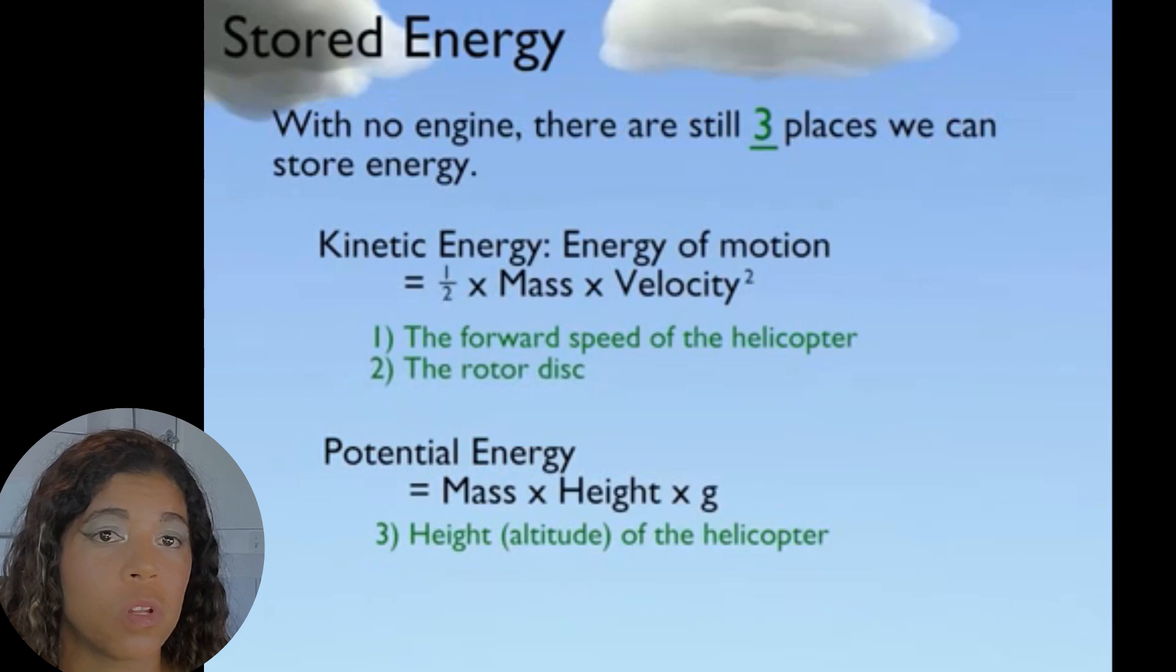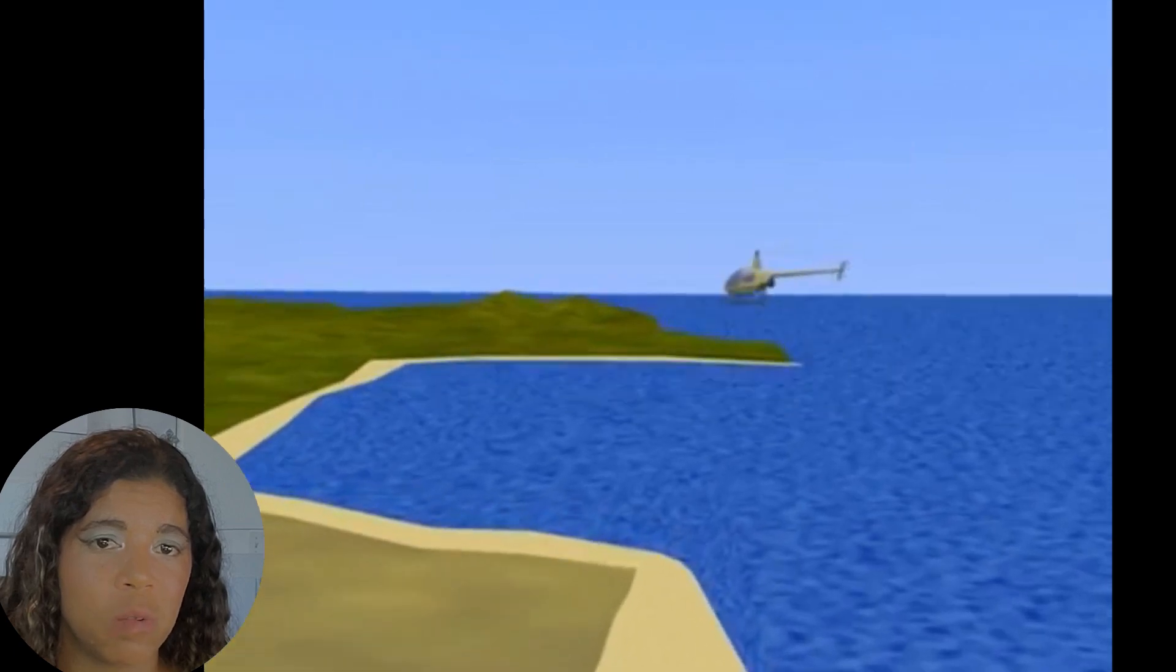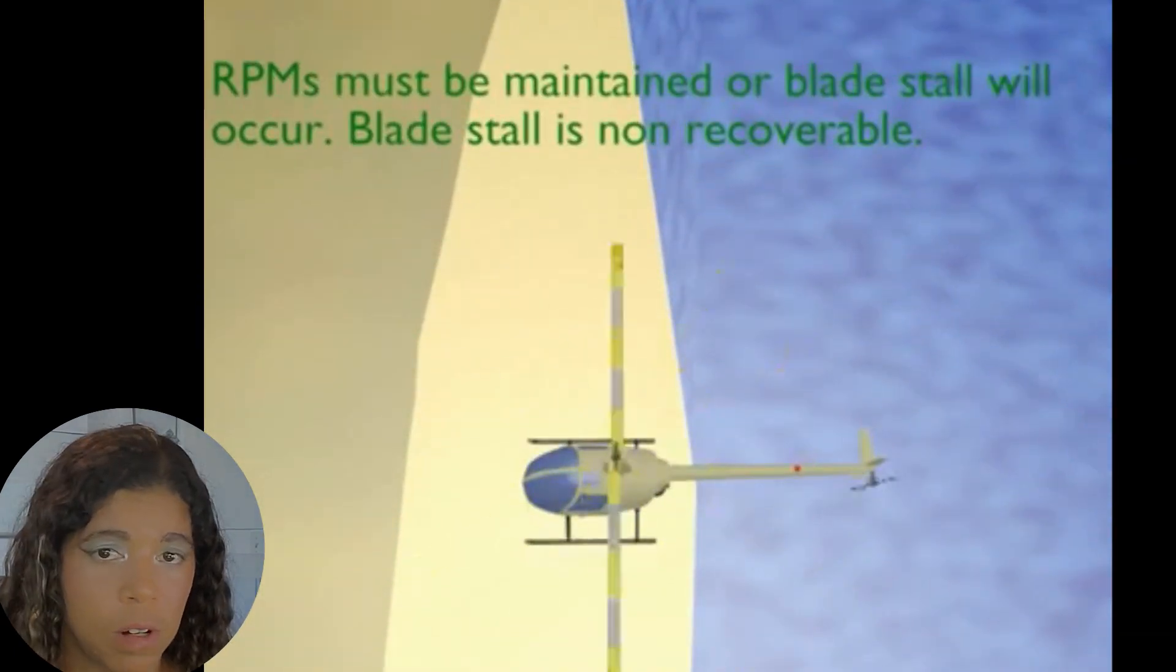We also have energy stored in the rotor disc, often called rotor inertia. A small amount of energy is contained in the rotor disc. RPMs must be maintained or blade stall will occur, and blade stall is non-recoverable.